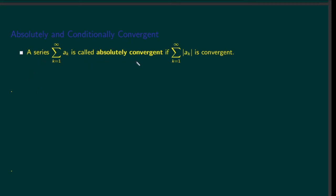A series is absolutely convergent if the series made by the absolute value of the original series is convergent. Each single term may take the absolute value, so that means we are only taking the magnitude of each term. If that series is convergent, we call the original series absolutely convergent.